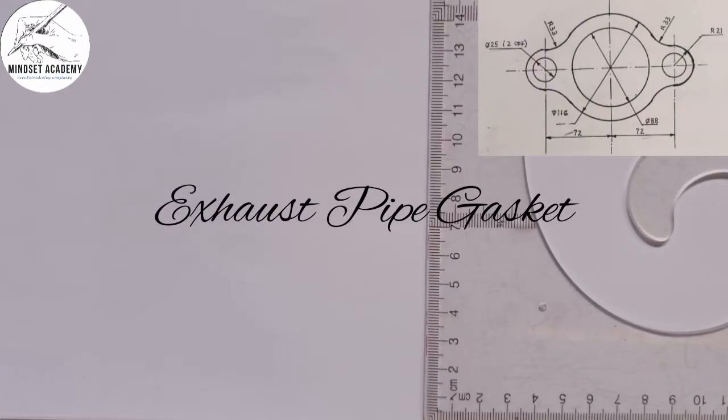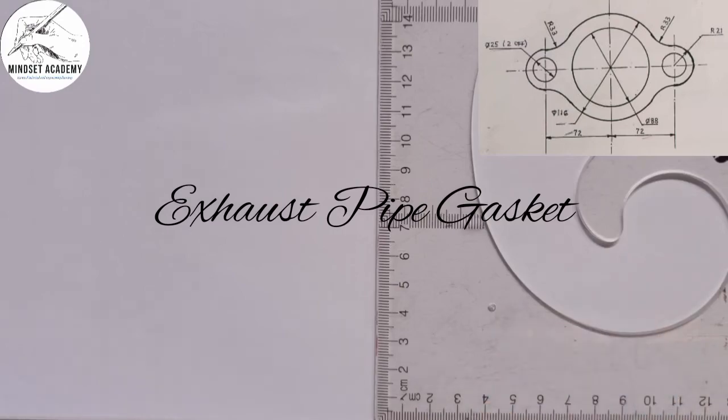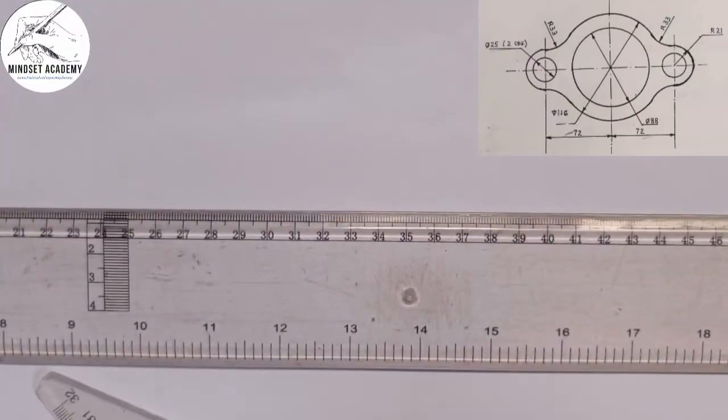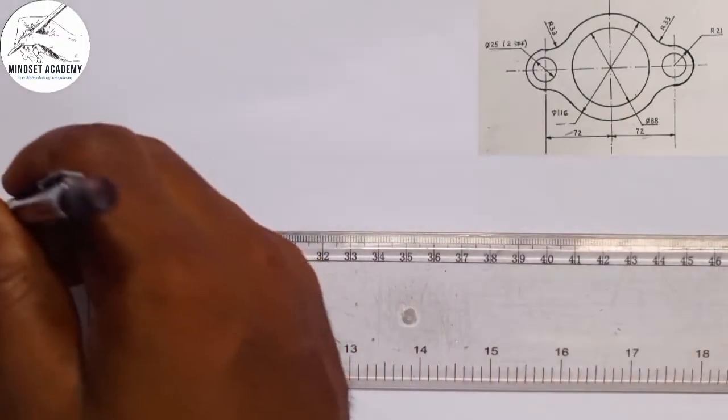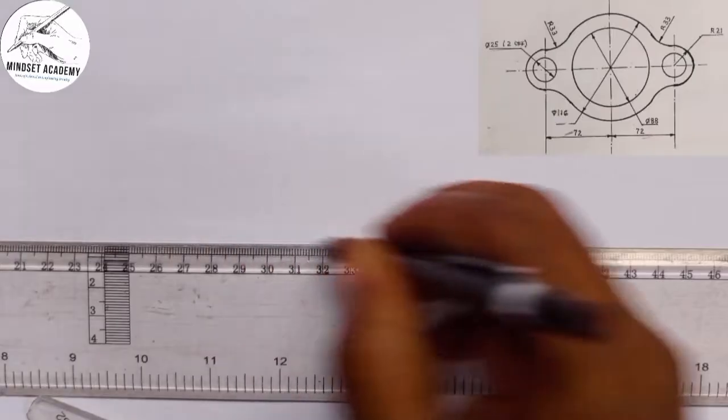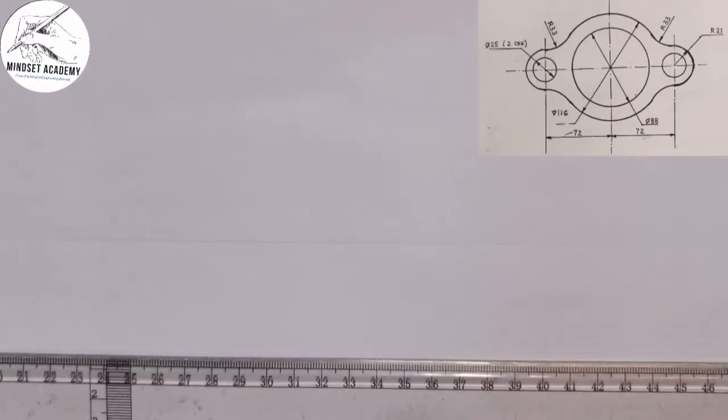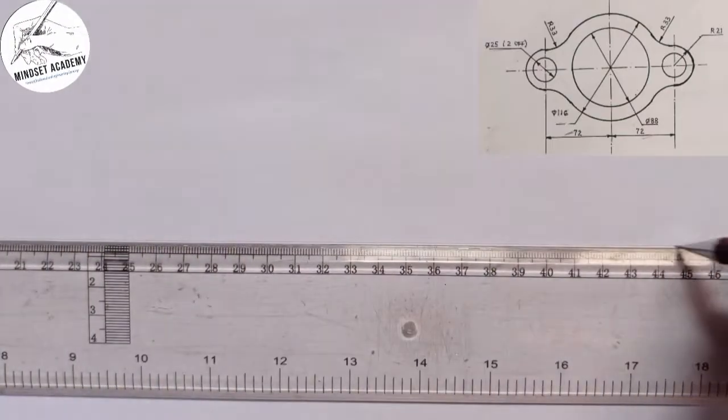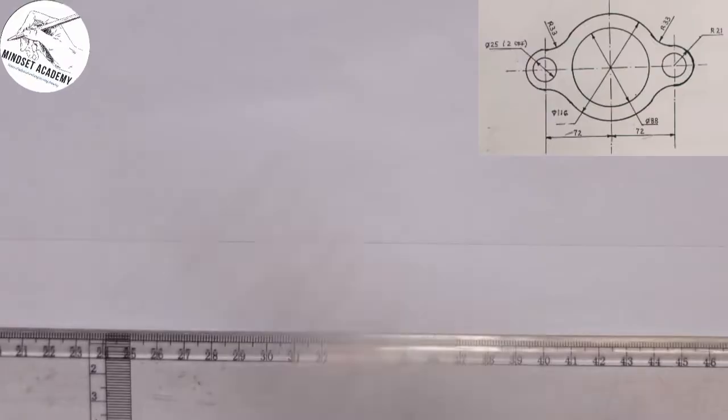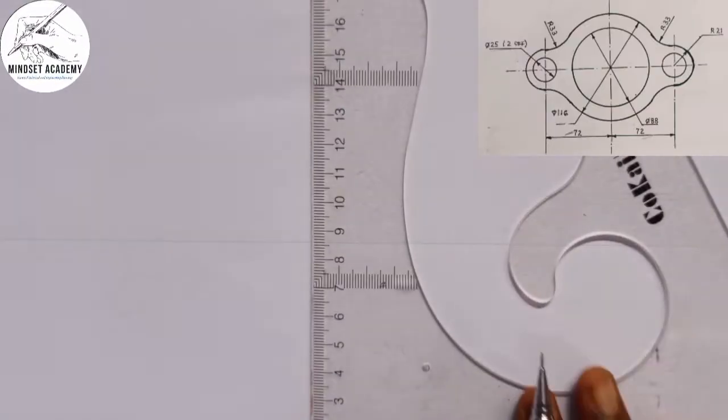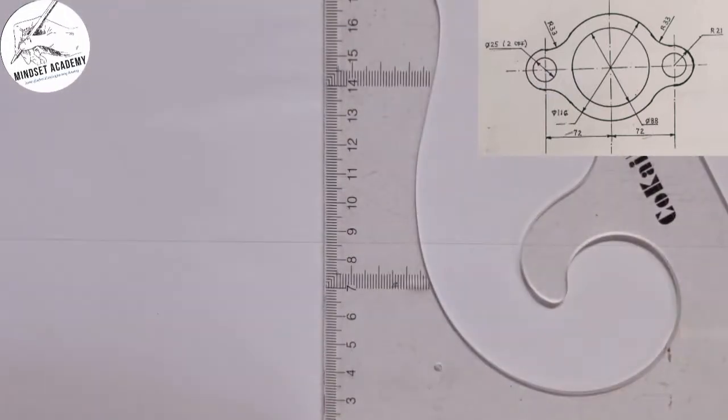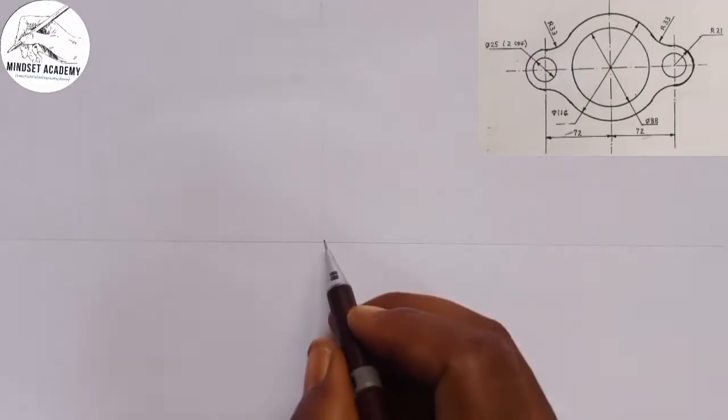Using the principle of tangency to reproduce that figure. Now the first thing you do is draw your horizontal line this way. Then the next thing you do is draw your center line this way, your vertical line. And they are meeting at this point here.